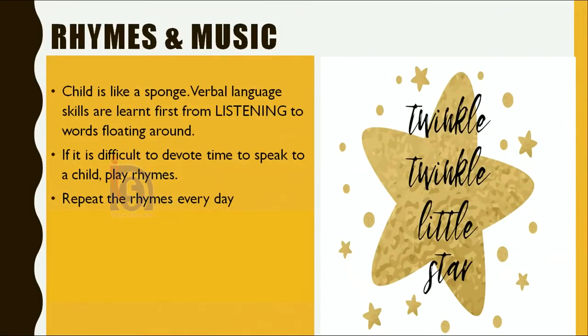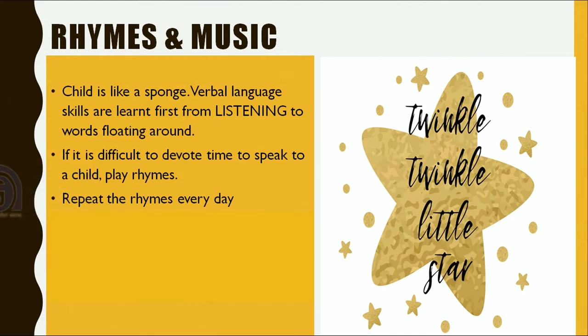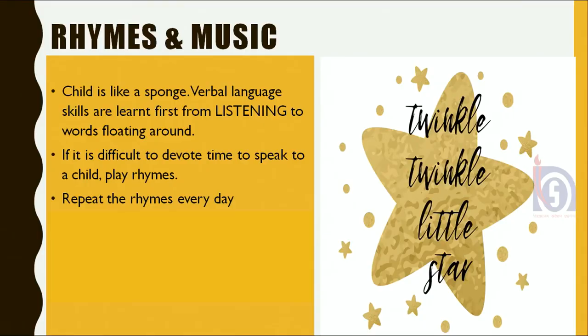These little rhymes most children sing, and this is a great way to teach language. A child is like a sponge. Verbal language and the skills needed for it are learned from listening to words floating around in the environment. If it is difficult to devote time to speak to a child, play rhymes. They can be nursery rhymes, they can be any rhyme — anything with a sing-song cadence and anything that captures a child's attention. Repeat the rhymes. We learnt about stars and that they twinkle — twinkle is not an easy word — but we learnt it very young from that rhyme.